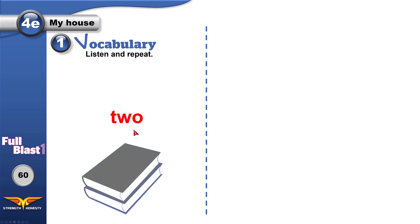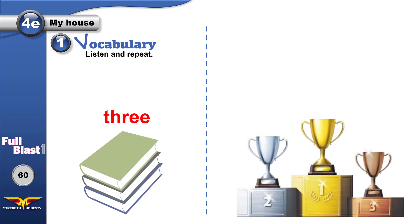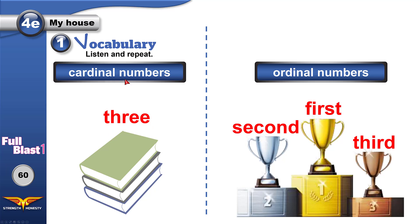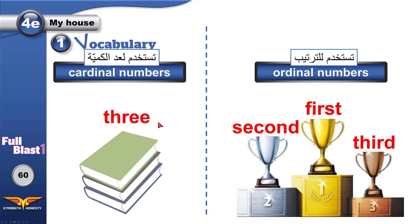1, 2, 3. 1st, 2nd, 3rd. What's the difference between the two? These are cardinal numbers. We use them for quantity. How many books do we have? Let's count: 1, 2, 3. But here, we are not counting. We show position — the position of something in a list. We use ordinal numbers.